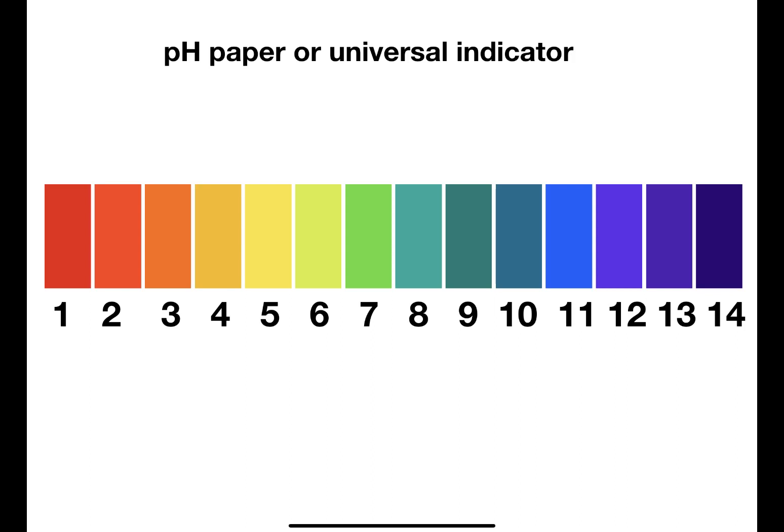When you have a substance and you wish to test its pH, you need to use either pH paper or universal indicator. Each of these substances shows a different colour for each of the 14 pHs.